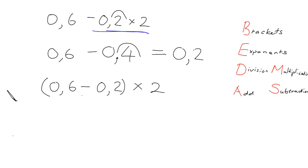Okay, hopefully this was nice and easy for you too. In this case, we do have brackets. And so the brackets are the first thing I must do. What's 0.6 minus 0.2? The answer here is 0.4.